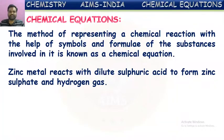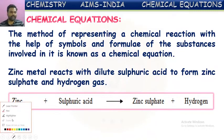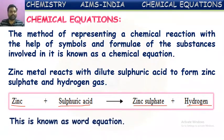Let us take an example: zinc metal reacts with dilute sulfuric acid to form zinc sulfate and hydrogen gas. The same can be represented equationally. Here, instead of using formulae, we have written the names directly, so this is known as a word equation.